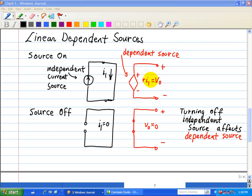However, when the source is off, it acts as an open circuit and KCL requires I₁=0. Therefore, the dependent source is now off and its output is V₀=0.